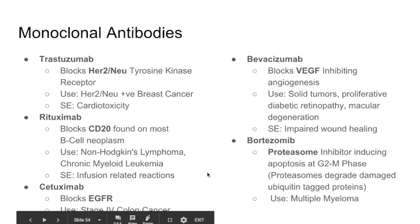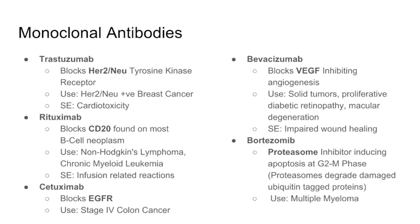Cetuximab blocks EGFR (epidermal growth factor receptor) and is used for stage 4 colon cancer. Bevacizumab blocks VEGF (vascular endothelial growth factor), which drives angiogenesis — new blood vessel formation. It's used for solid tumors, proliferative diabetic retinopathy, and macular degeneration. As expected, by inhibiting angiogenesis you inhibit blood flow, so a key side effect is impaired wound healing.